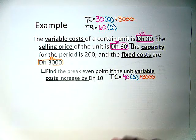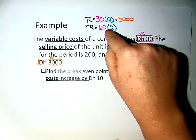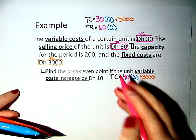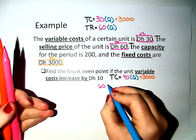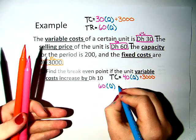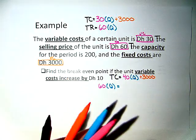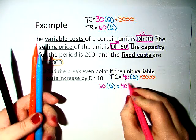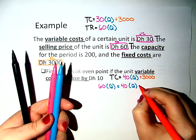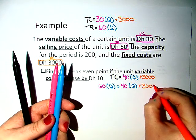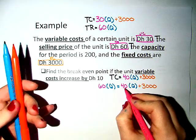So the break-even point would be 60Q equals 40Q plus 3,000. We start by solving for Q.